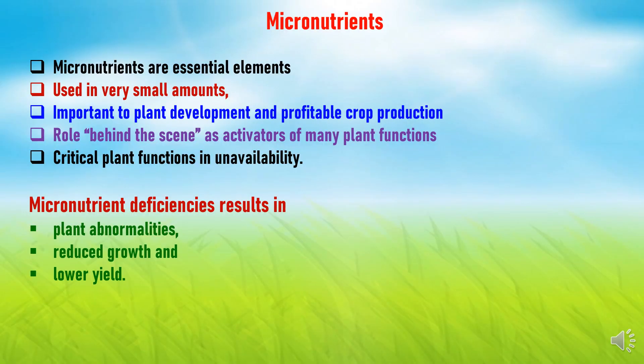Micronutrients are essential elements that are used by plants in small quantities. These plant food elements are used in very small amounts, but they are just as important to plant development and profitable crop production as the major nutrients. They work behind the scene as activators of many plant functions. Critical plant functions are limited if micronutrients are unavailable, and deficiencies result in plant abnormalities, reduced growth, and ultimately lower yield.